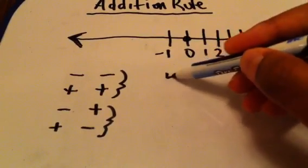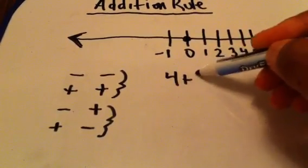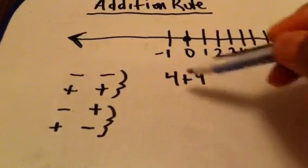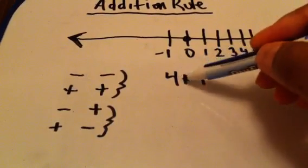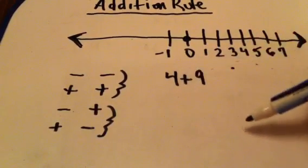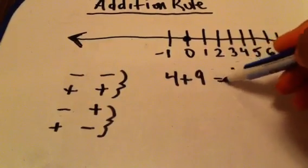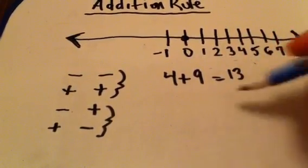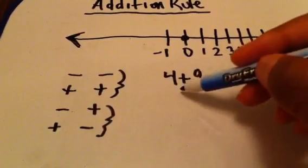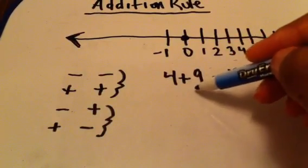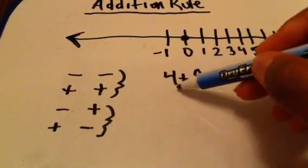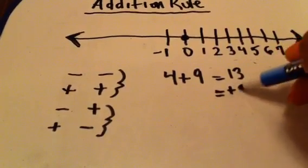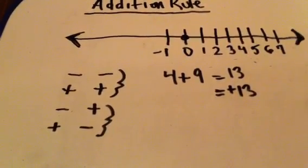Let's do like signs and take something we already know: 4 plus 9. 4 plus 9 is basically the absolute value of 4 plus the absolute value of 9, which is 13. The final answer will take the common sign of both numbers, and the common sign of two positive numbers makes that a positive 13.